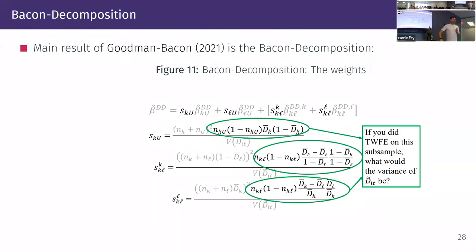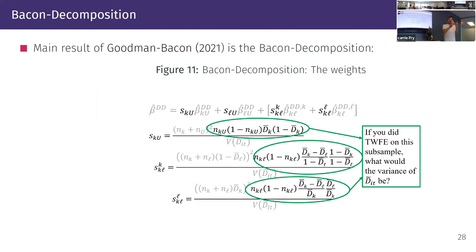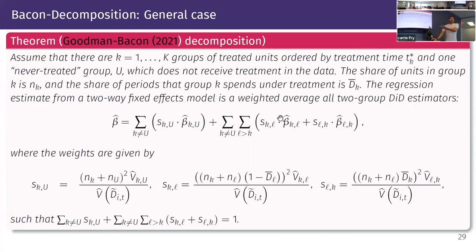One advantage is that you can parse out these pieces and look at each one — and those parameters might be of interest individually. That's exactly the way Callaway-Sant'Anna is built: it does this one by one and lets you pick your weights. If you run OLS you're letting the method choose weights for you, and it doesn't rule out any comparisons including bad ones. Callaway-Sant'Anna just says: do this one by one and pick the weights you care about. We don't have to be obsessed with a single regression — run one comparison at a time and aggregate the way you want.